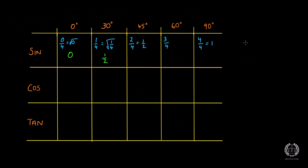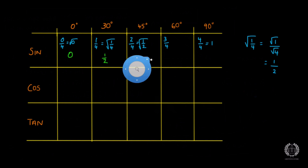Let me show you on the side what I mean. When I say square root of 1 over 4, I'm essentially doing square root of 1 over square root of 4. Square root of 1 is 1, and square root of 4 is 2, hence a half. Now for the next value we have a half, so we do the square root of a half, which gives us 1 over square root of 2 — you just leave it as 1 over root 2.